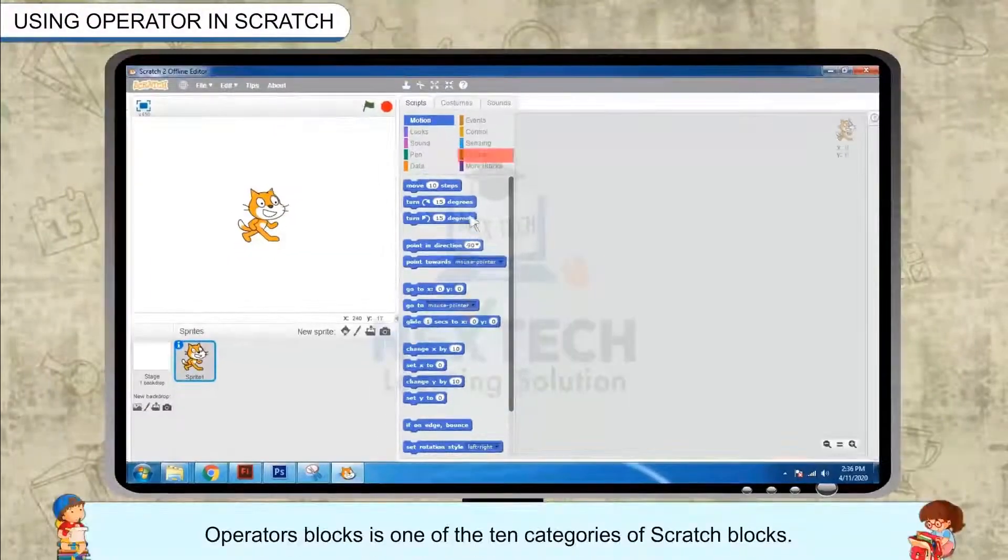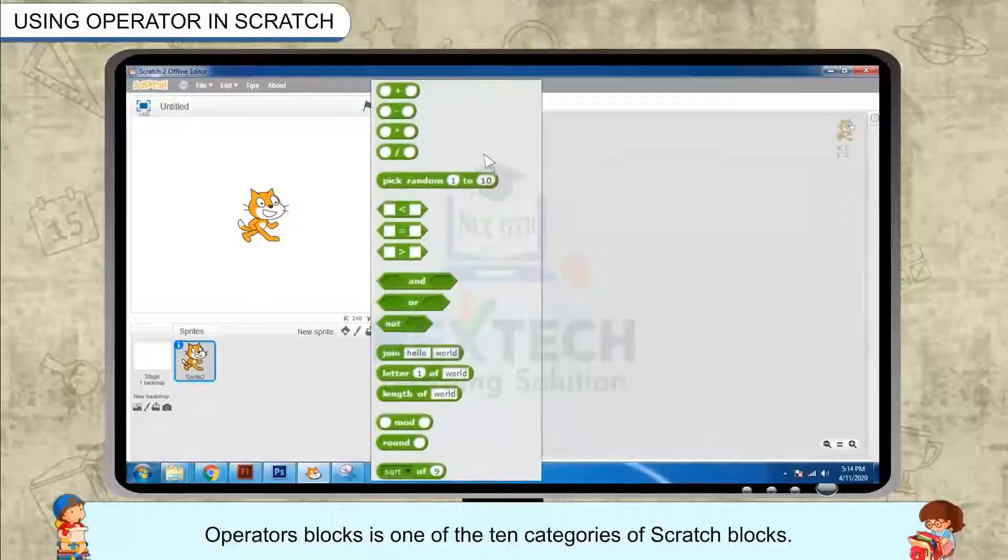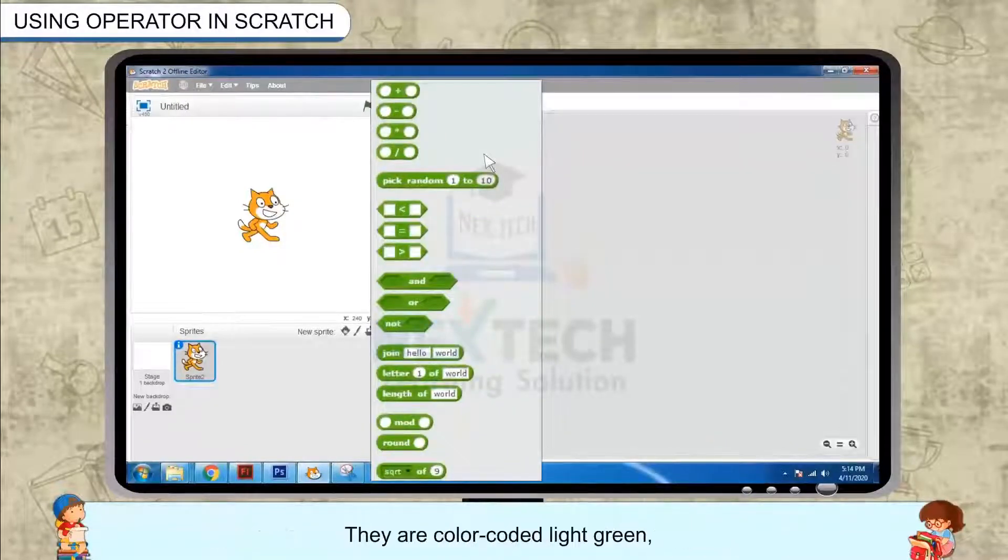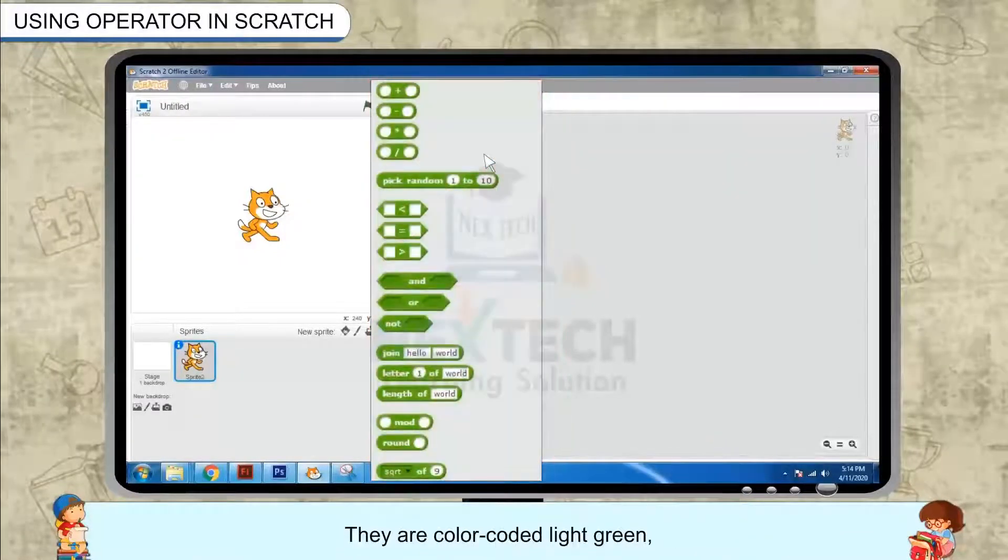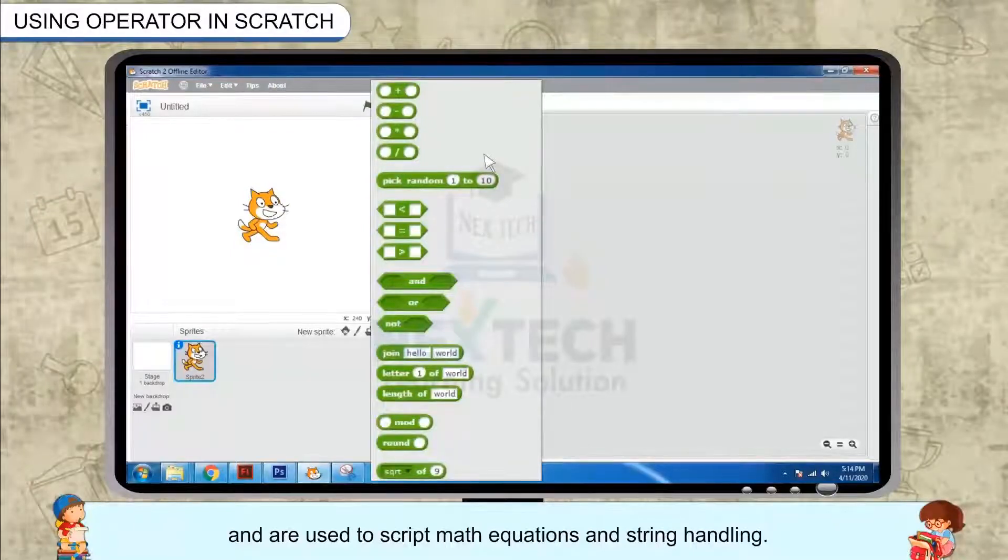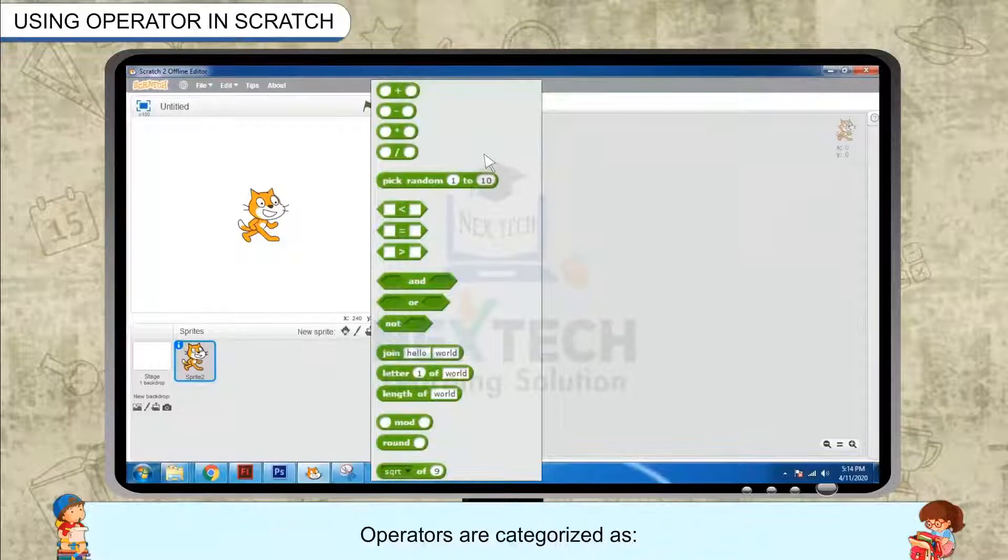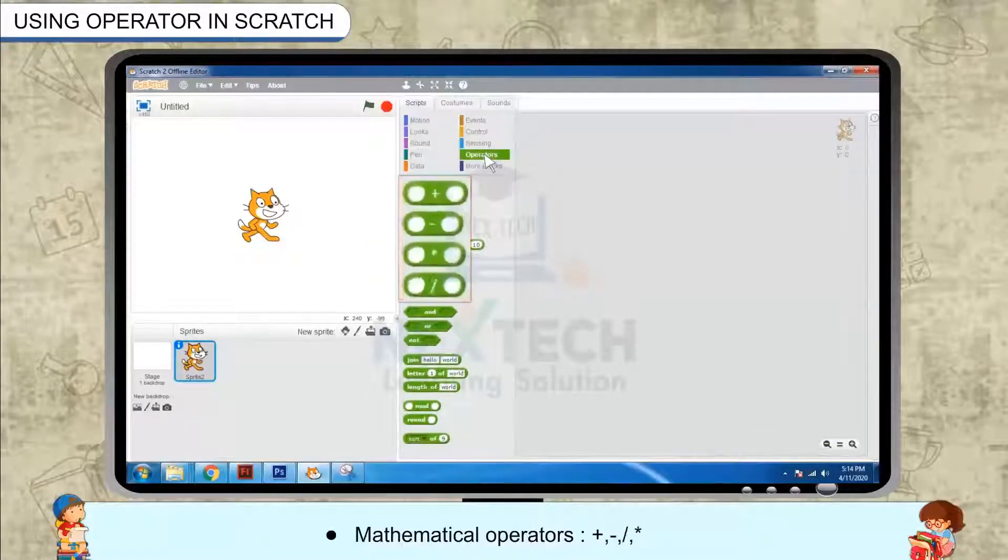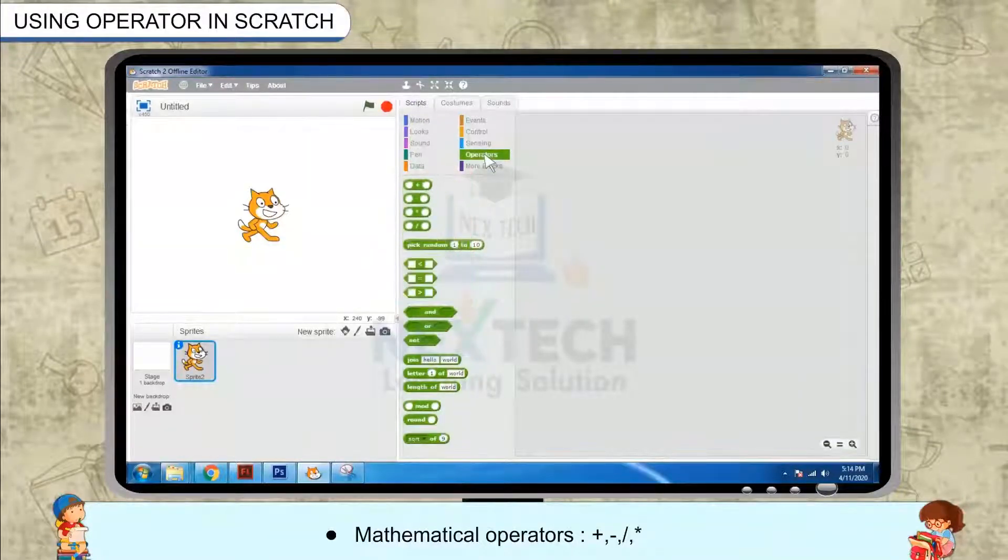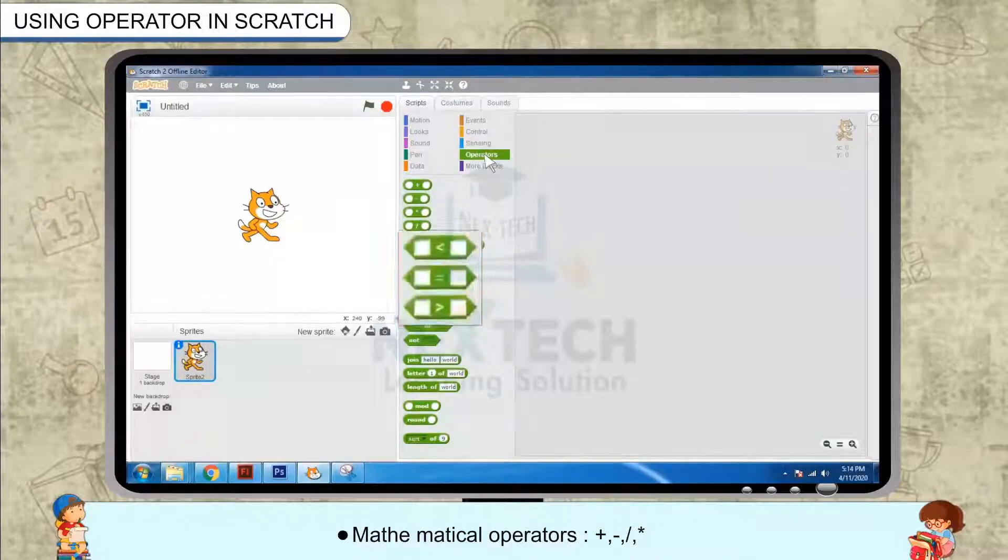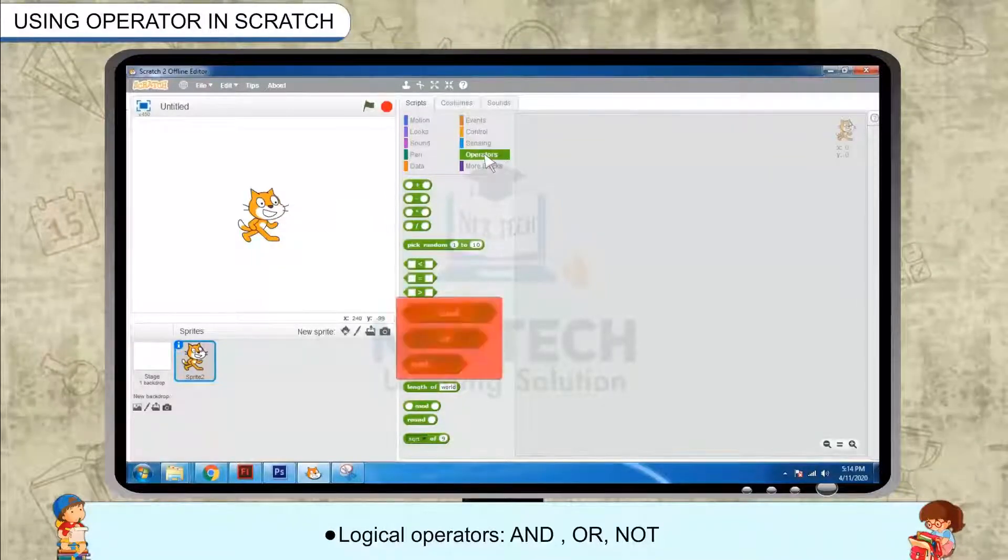Using Operator in Scratch. Operator Blocks is one of the ten categories of Scratch Blocks. They are color-coded light green and are used to script math equations and string handling. Operators are categorized as Mathematical Operators, Relational Operators, and Logical Operators.